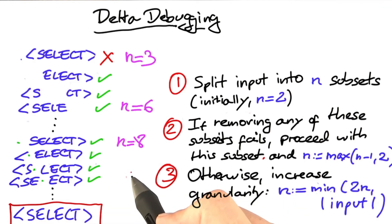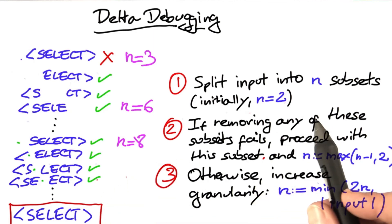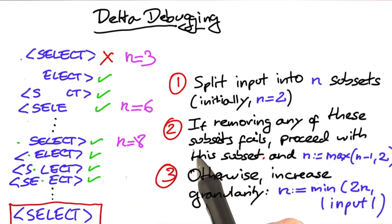In the worst case, that is for very pathological examples, the complexity of delta debugging is square with respect to its input. However, there's a nice situation in which delta debugging simply becomes a binary search and is as efficient as a binary search.